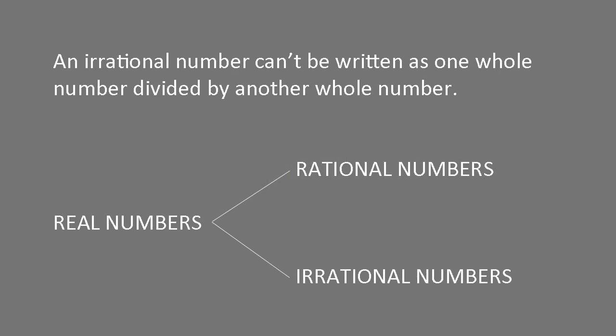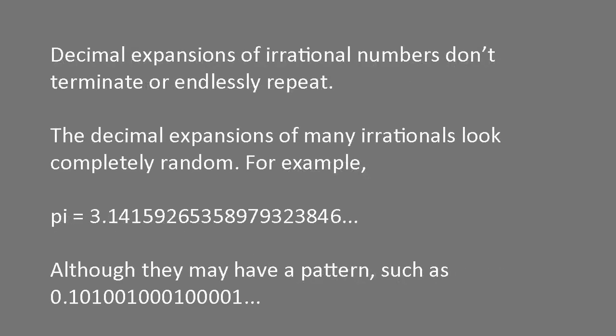An irrational number is a real number that can't be written as one whole number divided by another. In other words, it's a real number that isn't a rational number. The decimal expansion of an irrational number doesn't terminate or repeat itself, although in some cases it may have a pattern.